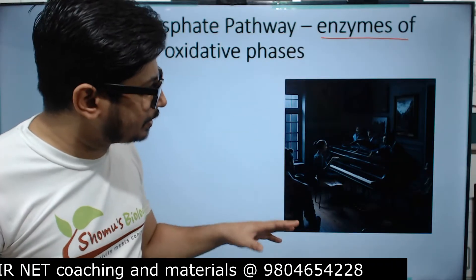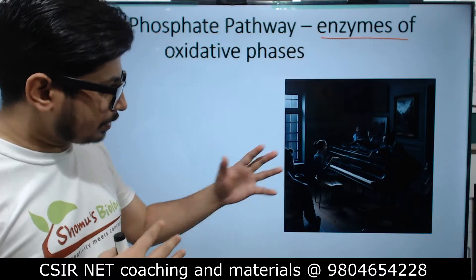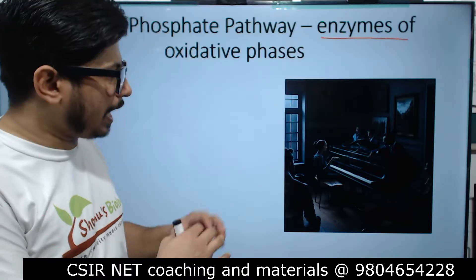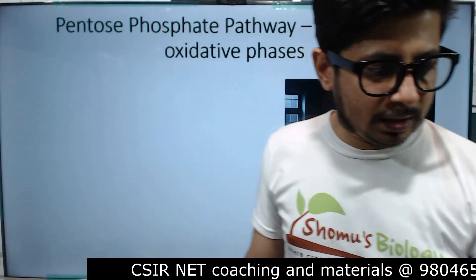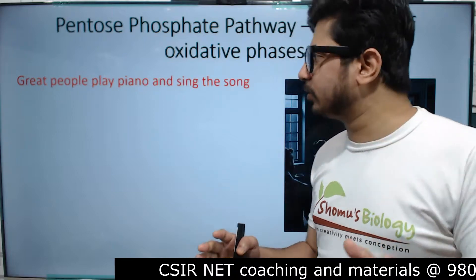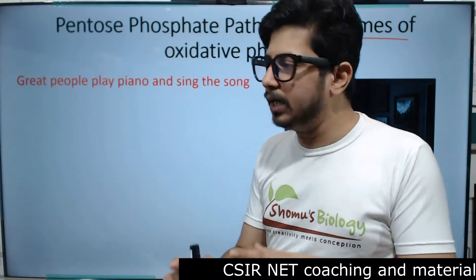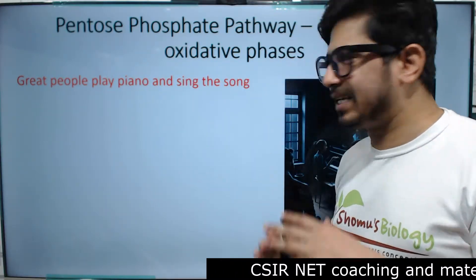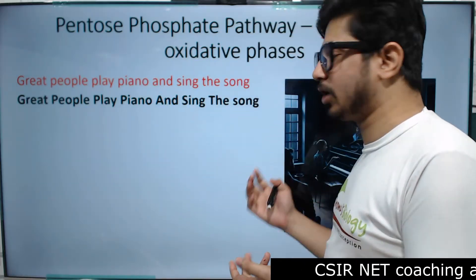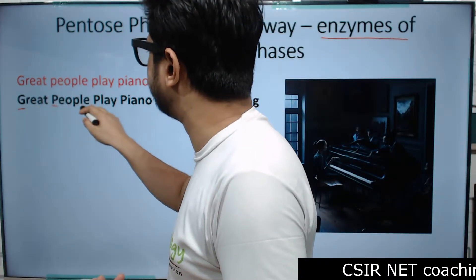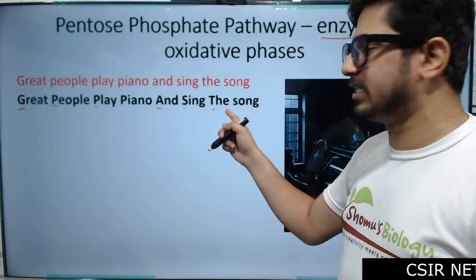Focus on this image where you can see some people playing piano inside a dark room. There's a dark room, a piano, and people — some are playing the piano, others are listening to the song. The mnemonic you need to remember is: 'Great people play piano and sing the song.' All of the starting letters are capital: G, P, P, P, A, S, T — these signify the names of the enzymes.